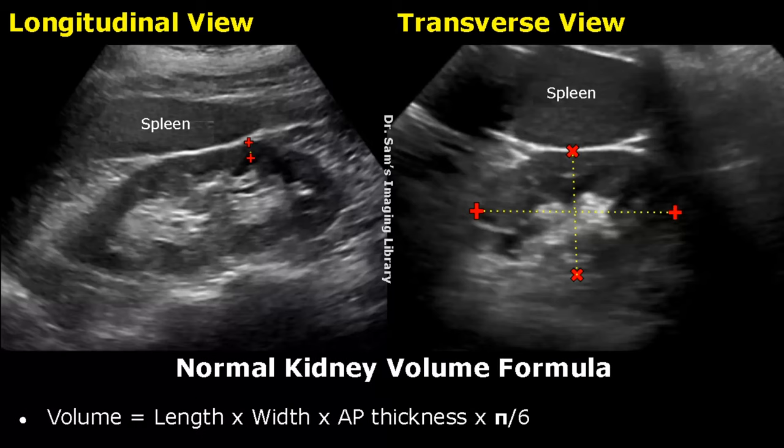After obtaining three measurements, renal volume can be measured using this formula: length into width into AP thickness into pi divided by 6, where pi is 3.14.